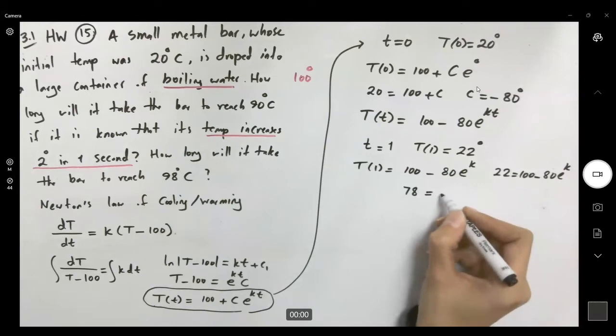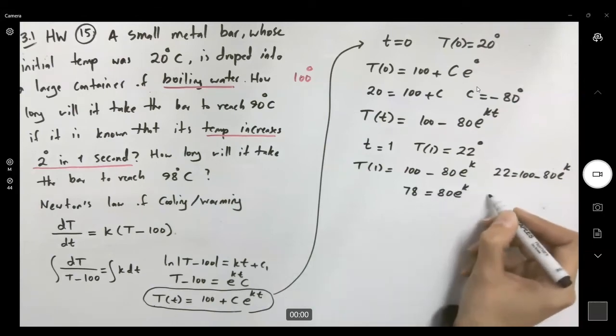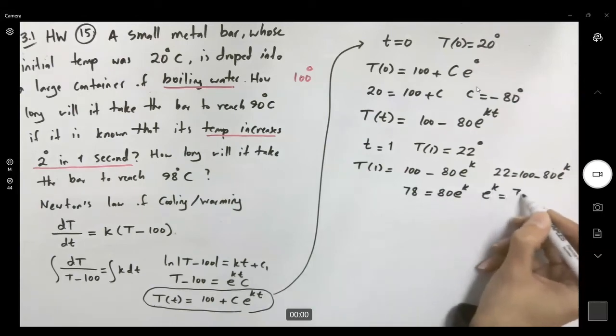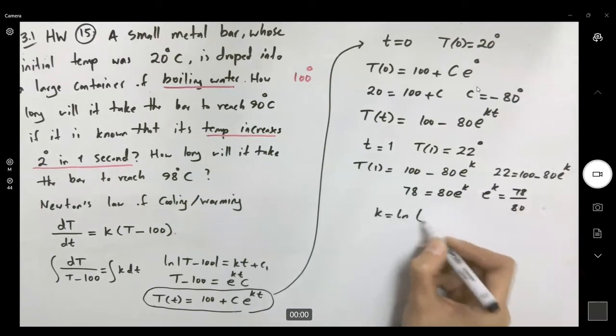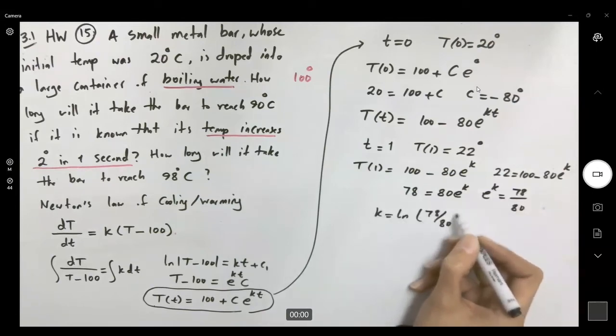78 is equal to 80 e to k, or e to k is 78 over 80, and k becomes ln of 78 divided by 80.